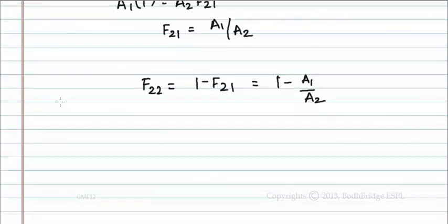Since these are infinite concentric tubes, area is directly proportional to d. So a1 by a2 equals d1 by d2.